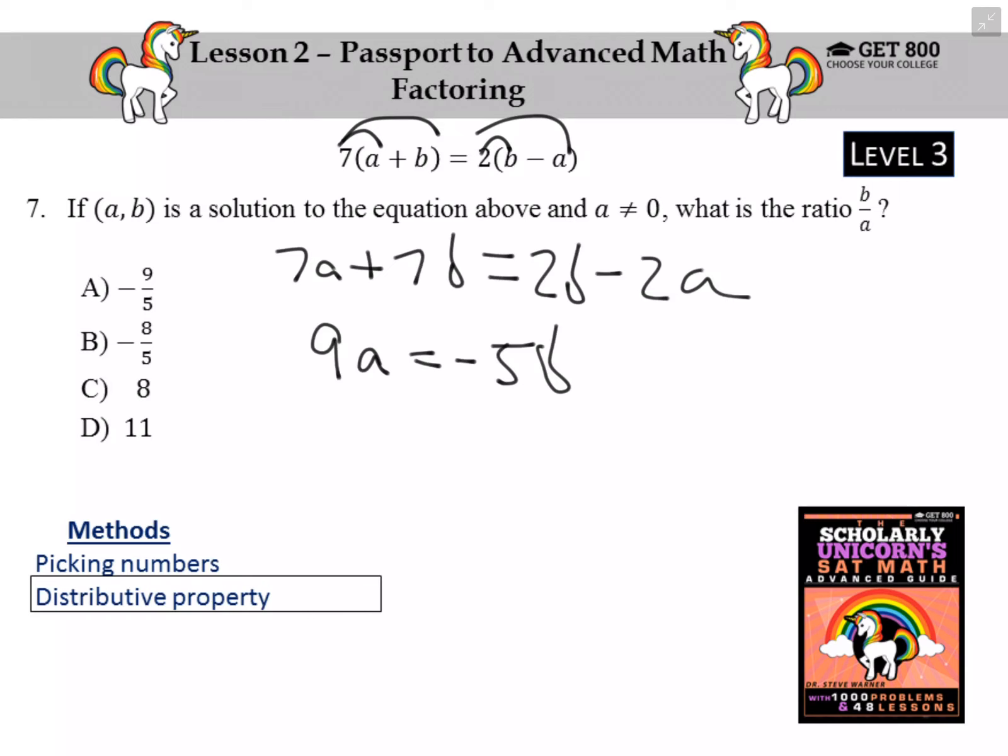Now I'm going to do cross-division, sort of like cross-multiplication, but you divide instead. We would like the expression B over A to appear. So to do that I'm going to divide each side of the equation by A.